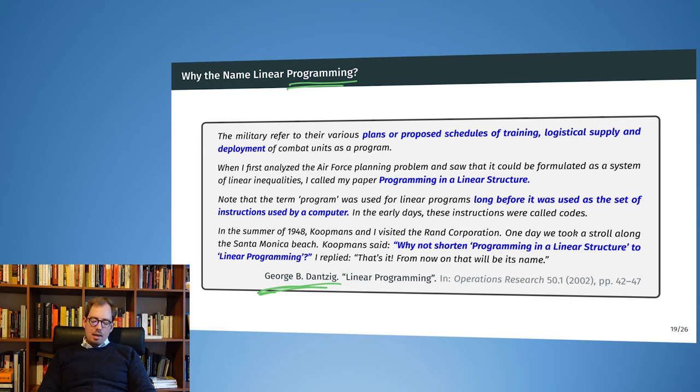Later on a colleague of him, Koopmans, proposed to shorten the name to linear programming, something more catchy. In science, sometimes you need your science to have a sexy name to catch on. In that case, linear programming did take on and today this is the term used for the type of problem that George Dantzig has been solving at the time.